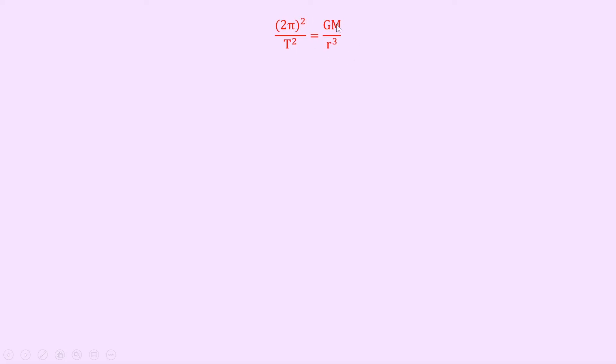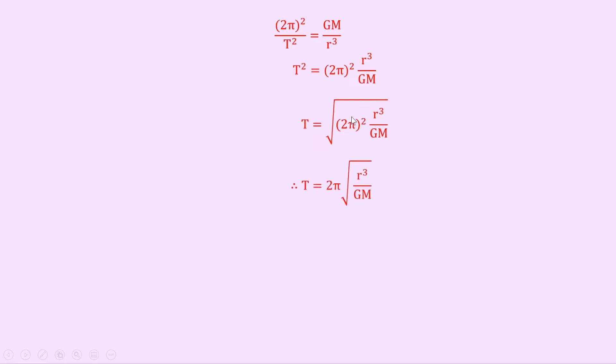Now we want to get to T, so we're going to cross multiply to get an expression for T squared first of all. We end up with T squared times GM is equal to r cubed times 2π squared, and then dividing both sides by GM gives us T squared equals 2π squared times r cubed over GM. Notice that I've not expanded the 2π squared term because we want to end up with 2π in our square root. So square rooting both sides gives us T equals 2π times the square root of r cubed over GM. And that's our final answer.